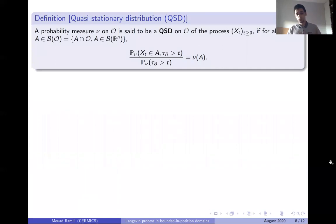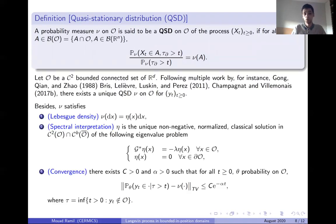Now we move on to the second part related to the QSD. So consider a process Xt and a domain O. A QSD nu here is a probability measure so that if the process is initially distributed according to nu and for a time t, it hasn't left the domain O until time t, then it's still distributed according to the probability measure nu.